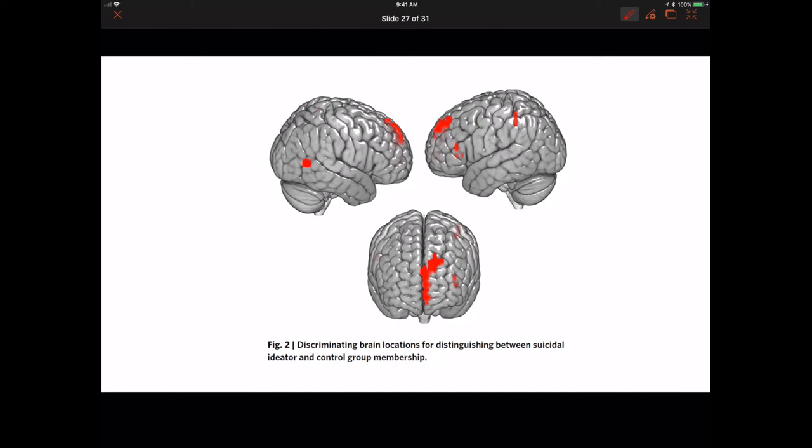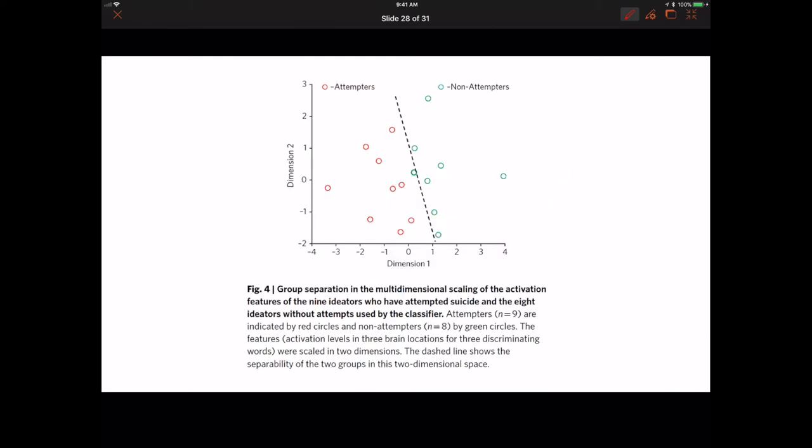These are the discriminatory areas that light up reliably when contrasting suicidal group membership and non-suicidal group membership. You can predict who will attempt suicide by looking at these signals. This machine learning paradigm separates with almost 100% accuracy the suicide attempters from the non-attempters.